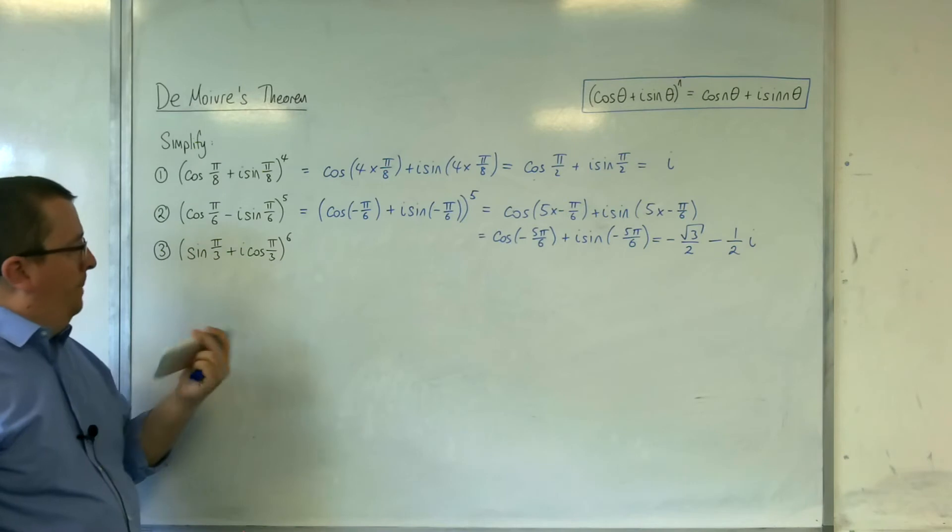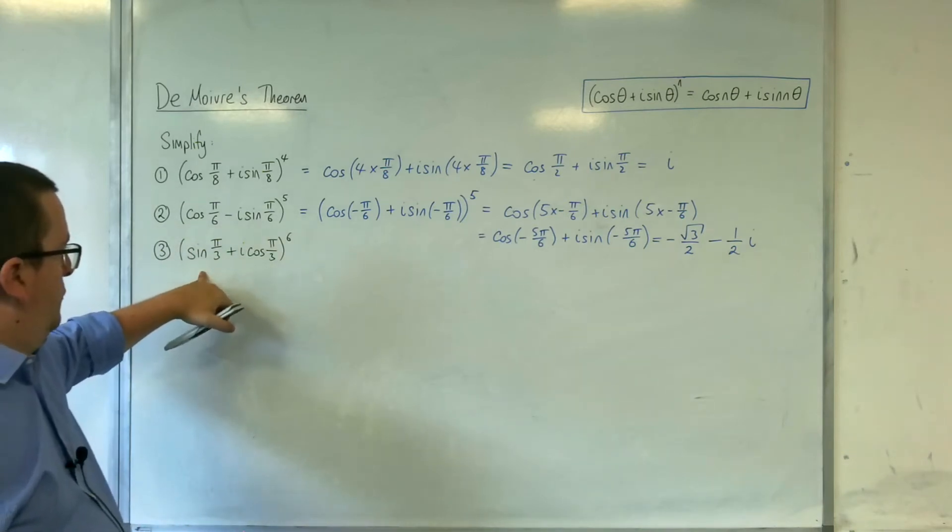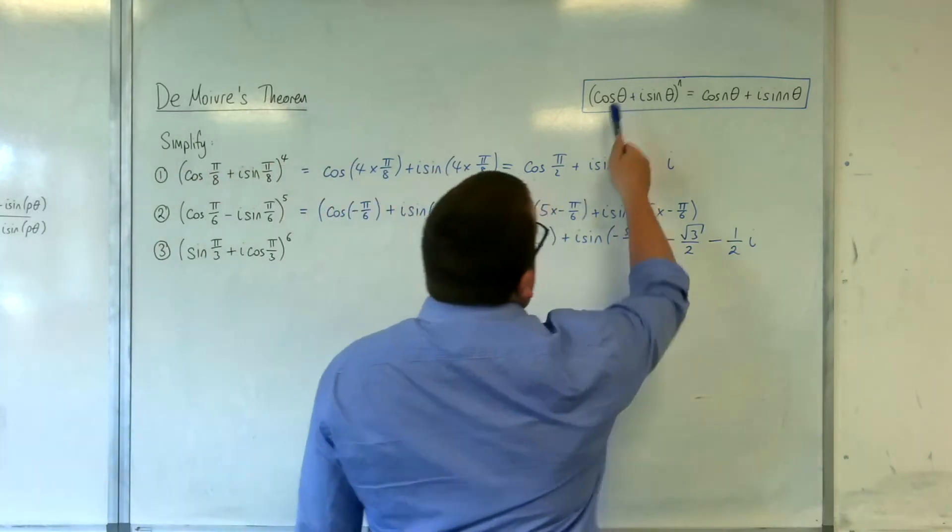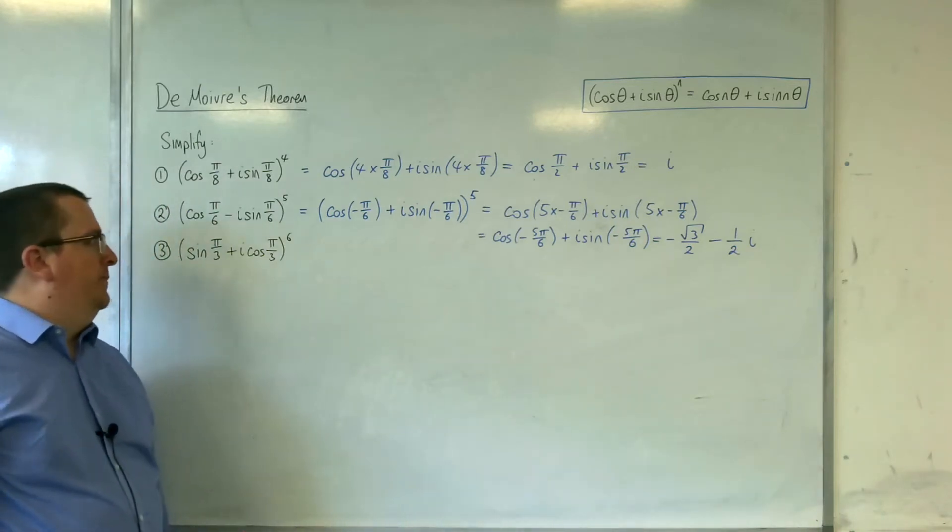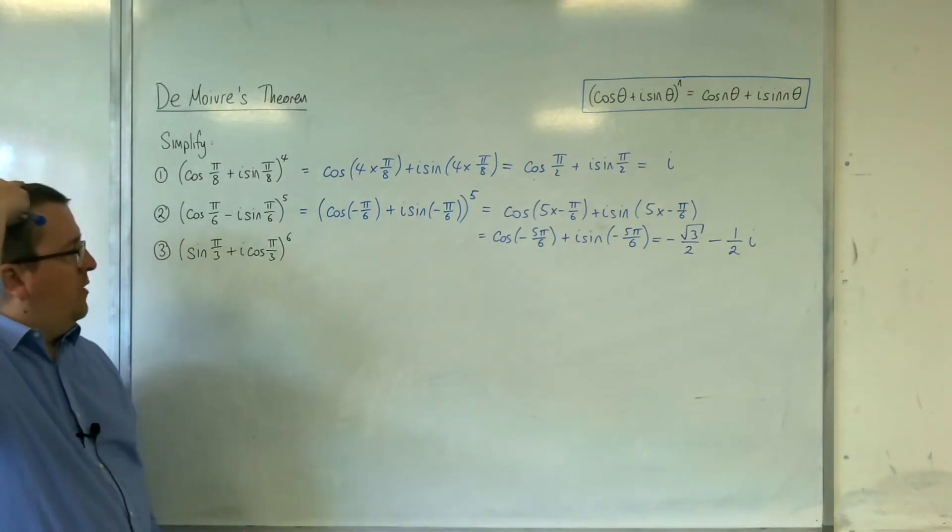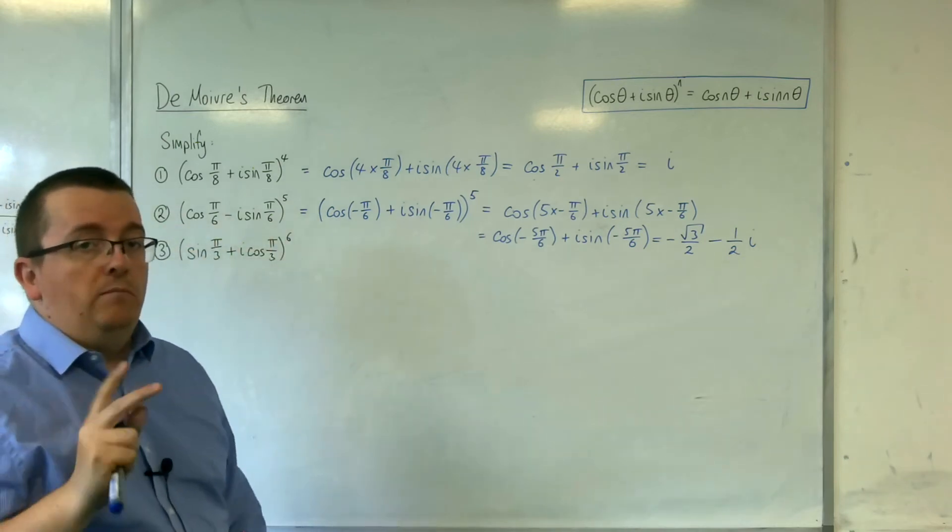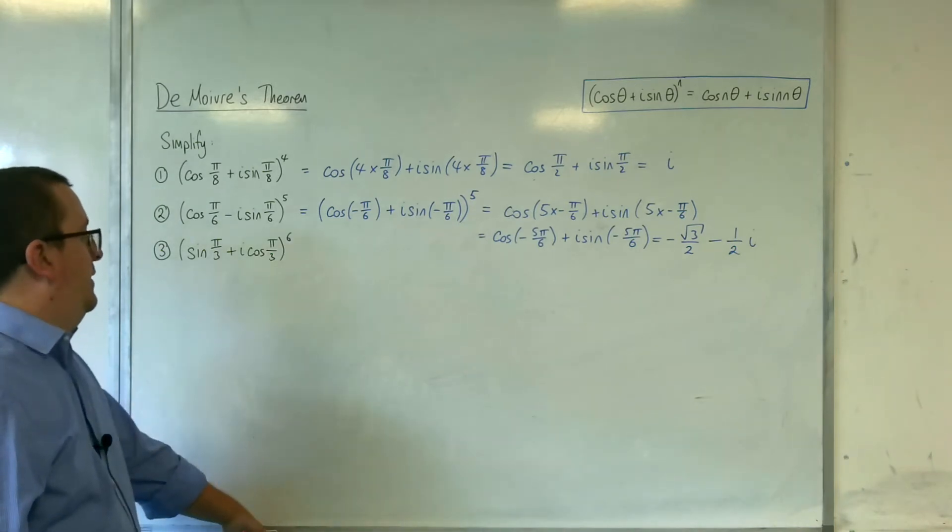Right, now this last one has the sine π over 3 plus i cosine π over 3, which is not the correct way round for De Moivre's theorem to work. So I can't go straight in and bring the 6s down and do it that way. Not going to work. So how am I going to get around this?